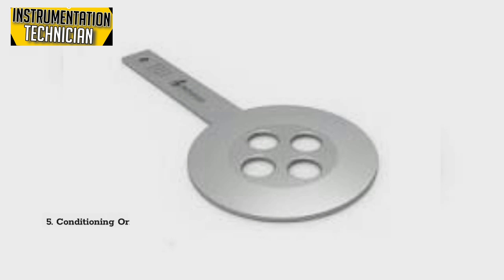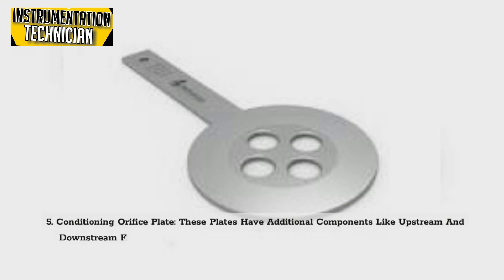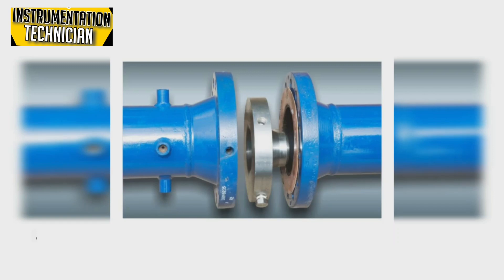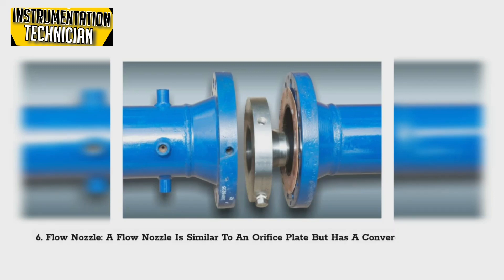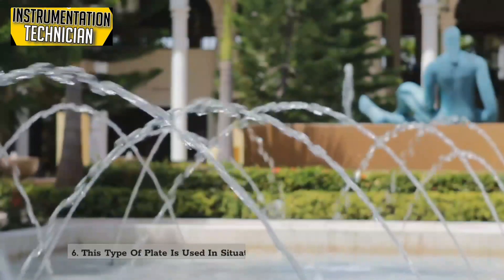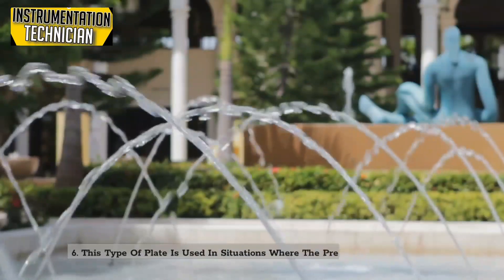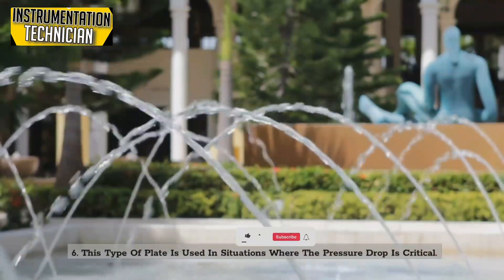5. Conditioning orifice plate — these plates have additional components like upstream and downstream flow conditioners, which are used to reduce turbulence and increase measurement accuracy. 6. Flow nozzle — a flow nozzle is similar to an orifice plate but has a converging inlet section and a diverging outlet section. This type is used in situations where the pressure drop is critical.